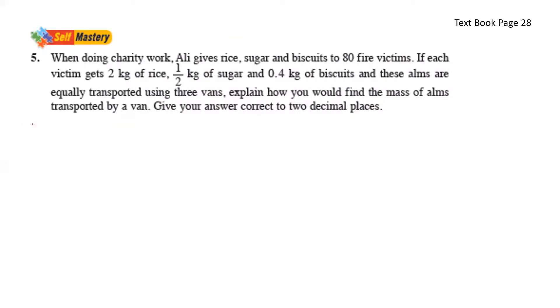When doing charity, Ali gives rice, sugar, and biscuits to 80 fire victims. For 80 fire victims, he gives rice, sugar, and biscuits. If each victim gets 20 kg of rice, so rice is 20 kg, sugar is 0.5 kg, and biscuits is 0.4 kg. These items are equally transported using three vans.